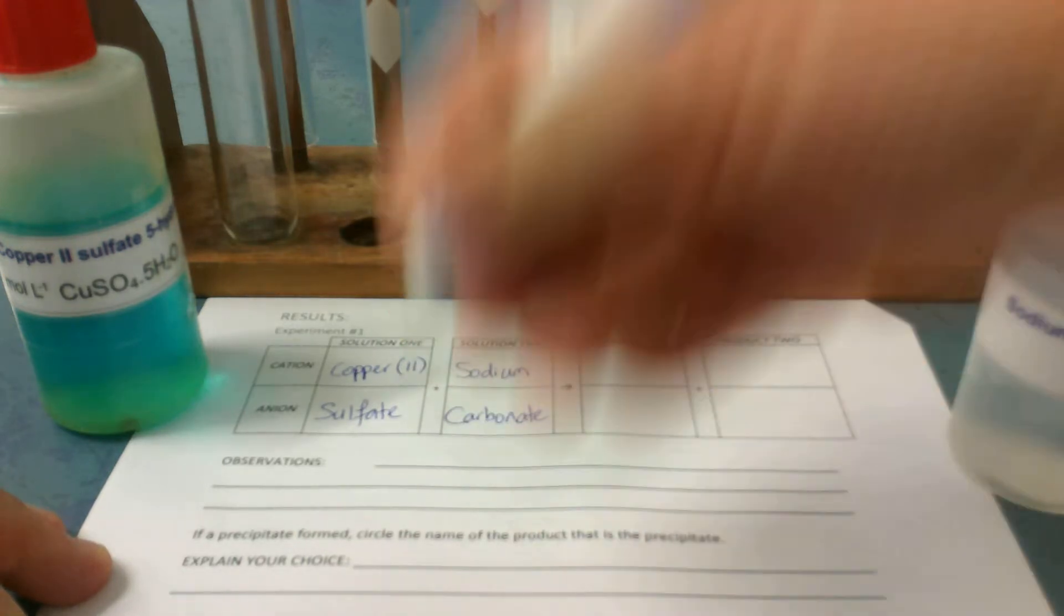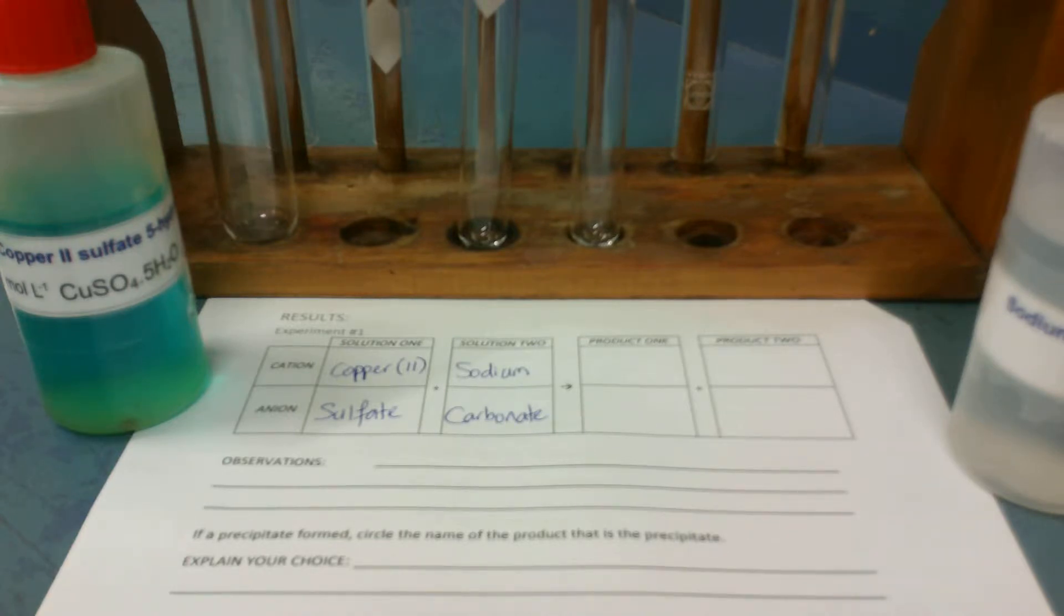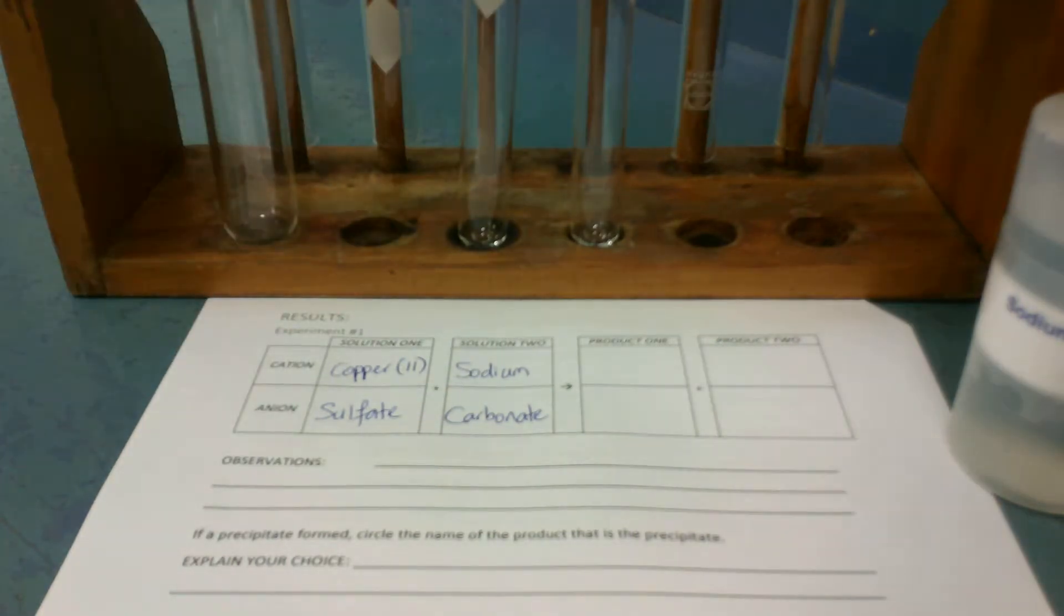Now the trick is to mix them together. So what we're going to do is we can choose either one. The easiest way is solution 1 goes into the test tube. So I'm going to pour a little bit of solution 1 into the test tube, just a little bit. So you can see it's not much up on the screen. It's just a little bit at the bottom.